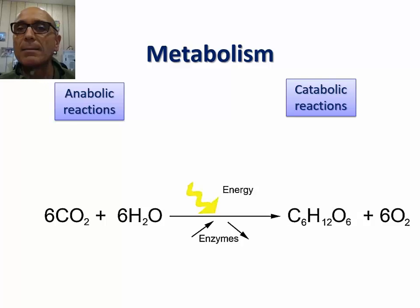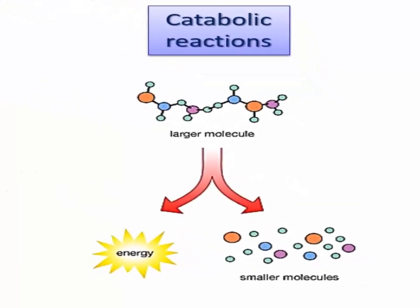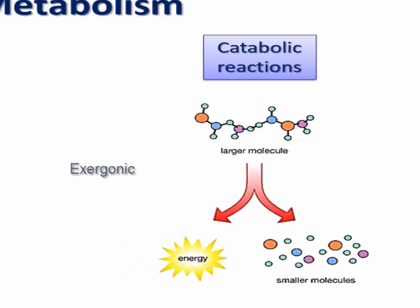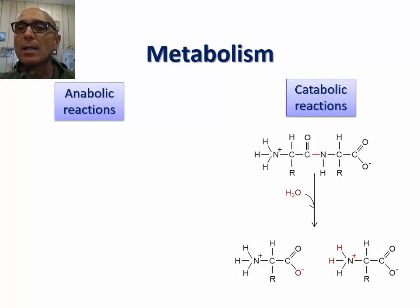On the other hand, catabolic reactions involve the breakdown of complex molecules into simple ones, thus releasing energy. This makes catabolic reactions exergonic by nature. An example of catabolic reactions is the breakdown of a peptide chain into single amino acids.